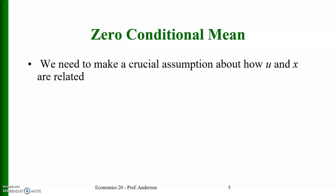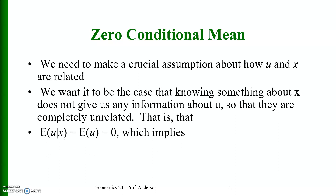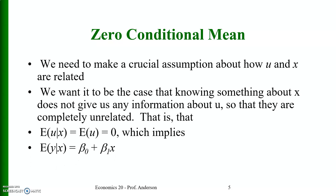We need to make a crucial assumption about how x and u are related. We want it to be the case that knowing something about x does not give us any information about u, so that they are completely unrelated — that is, E[u | x] = E[u] = 0.